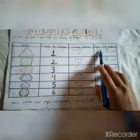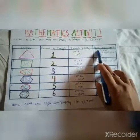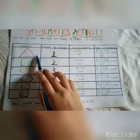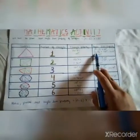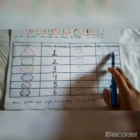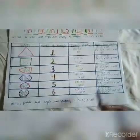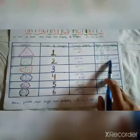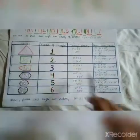So the angle sum property of a polygon is (n-2) × 180 degrees, where n is the number of sides. The number of sides in a triangle is 3, so 3 - 2 = 1, and 1 × 180 = 180 degrees. For a square: 4 - 2 = 2, and 2 × 180 = 360 degrees.